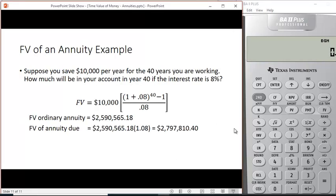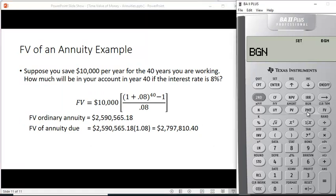Let's take a look at an example. Let me reset my calculator. Second, hit that payment key which gets you to BGN. To change it, you have to hit second set, the enter key. I want to clear my workspace, so second, clear TVM. The question says you're going to get $10,000 per year for the 40 years you're working. How much will be in your account in year 40 if the interest rate is 8%? N is 40. The interest rate is 8%, whole number for the calculator. And the annuity is 10,000, that's the PMT. And we compute the future value and we get $2,590,565.18.